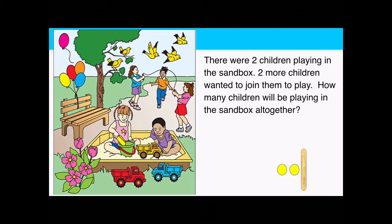Let's go back and look at the problem for the next set of counters we will need. It says two more children wanted to join them to play. So that means let's get two more counters and be sure to place them on the right of your break apart stick, friends. Now, to find out how many children will be playing all together, what do we need to do?